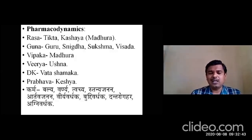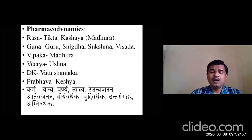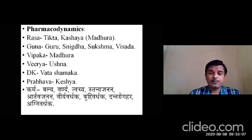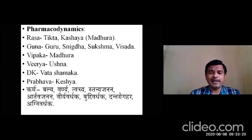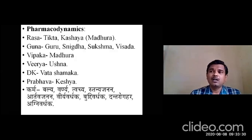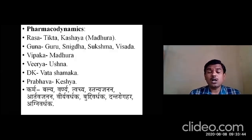The karma of Thila Thaila includes Keshya, Balya, Varanya, Tvachya, Sthanya Janana, and Arthava Janana. Due to its Ushna Virya, it is Arthava Janana, and precaution should be taken for persons consuming anti-coagulant drugs like aspirin, as it is contraindicated in such conditions due to its Tikshna Guna, which may create complications. Other karmas include Veeryavardhaka, Buddhi Vardhaka, Danta Rogahara, and Agnivardhaka.